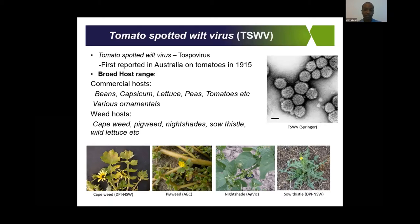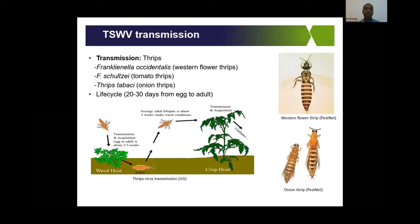In terms of transmission, tomato spotted wilt is transmitted mainly by three types of thrips: the western flower thrips, tomato thrips, and onion thrips. It's the western flower thrips that's a huge problem because it's very effective in transmitting the virus.